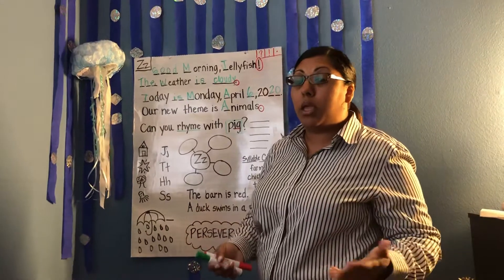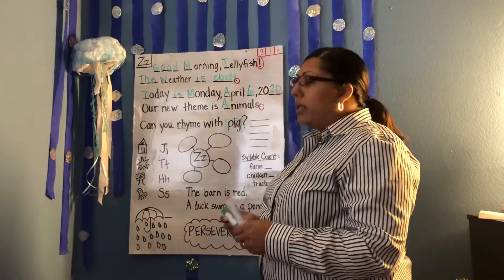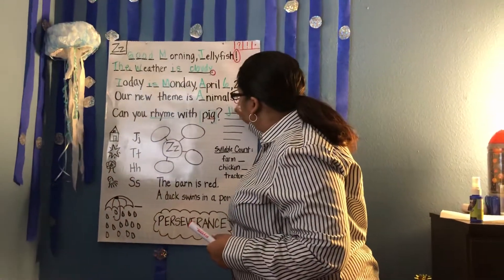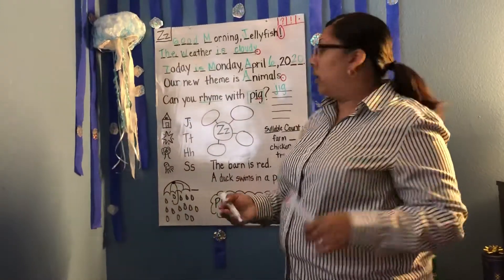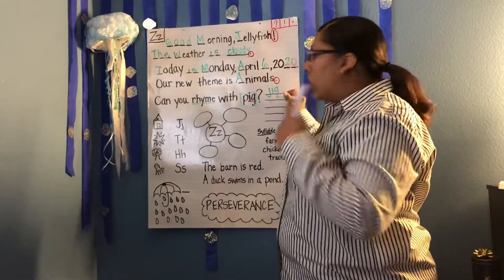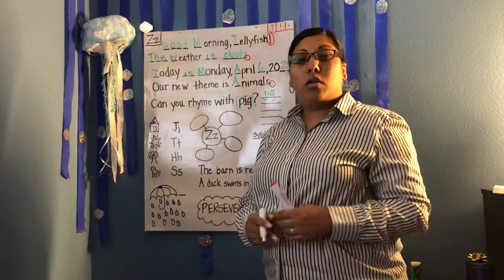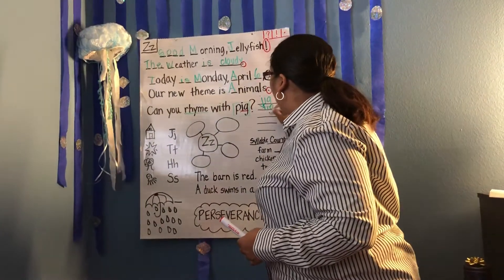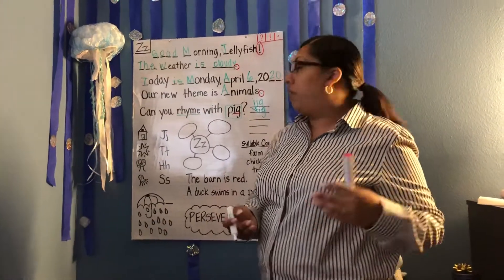Ig, ig, pig. We're going to say the word jig. Can you say that word with me? Jig — ig, ig, jig. Let's think about another one. Pig, jig. F-F — what letter makes that sound? That's right, the letter F. Fig. Can you say that with me? Ig, ig, fig.